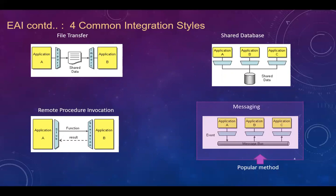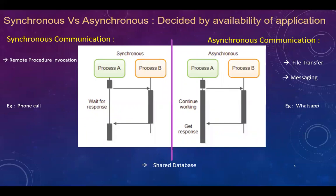When two different applications want to establish communication, immediately comes the concept of synchronous and asynchronous communication. Whenever application A wants to communicate with application B, it will send a request and application A would be waiting for the response to come back. If you are waiting for the response, that is called synchronous. Whereas if you don't wait for the response and you proceed doing other work, and once the response comes back you take it and start working on it, then it is called asynchronous.